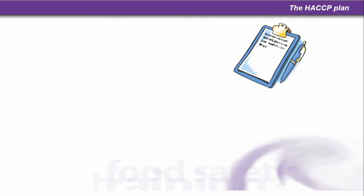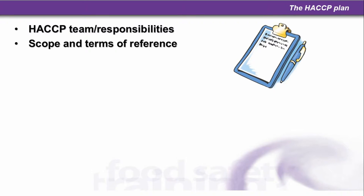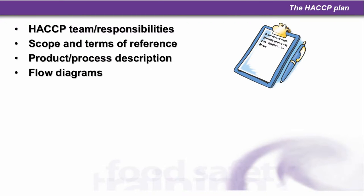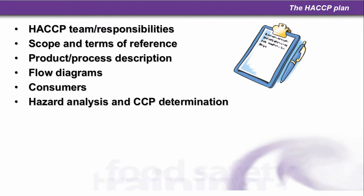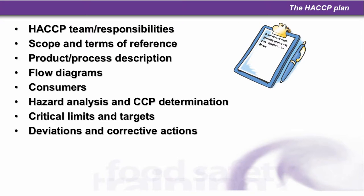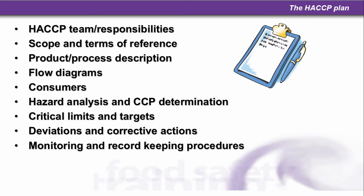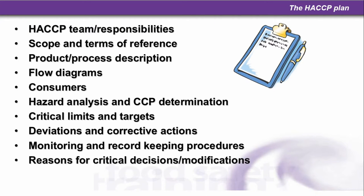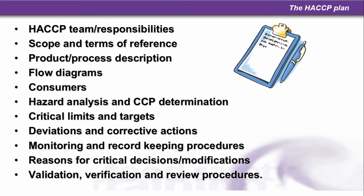The HACCP plan covers the HACCP team and their responsibilities, scope and terms of reference, product and process description, flow diagrams, consumers, hazard analysis and CCP determination, critical limits and targets, deviations and corrective actions, monitoring and record keeping procedures, reasons for critical decisions and modifications, validation, verification and review procedures.